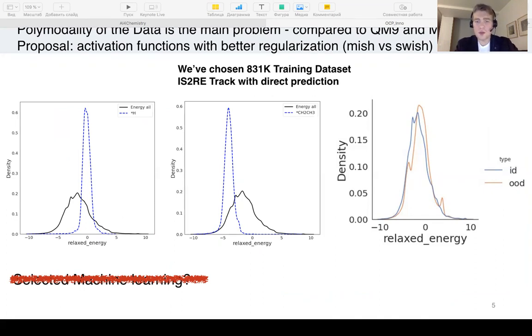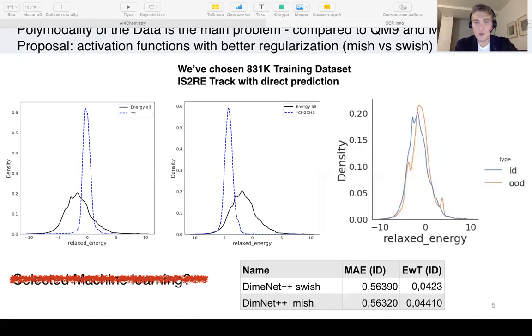The first approach was to use Mish activation functions as more regularized compared to SiLU. The result is small improvement in in-domain and out-of-domain examples by mean absolute error both in energy and within threshold values.